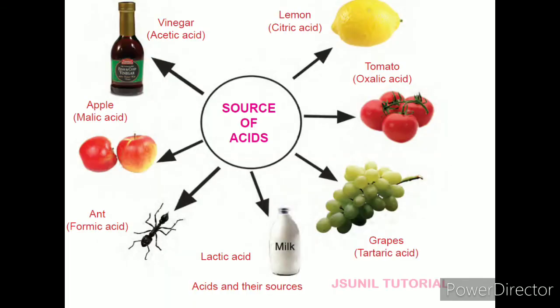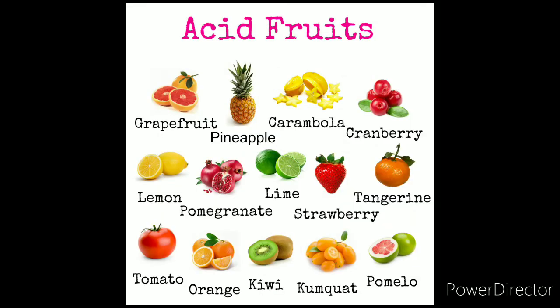The acids which occur in fruits and vegetables are called naturally occurring acids. These are also called organic acids. So whether we call them naturally occurring acids, weak acids, or organic acids, they all refer to the same thing — three different names for the same category.